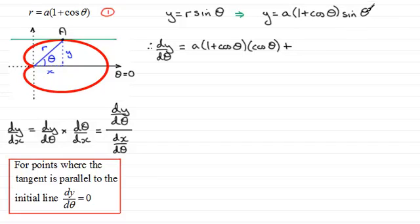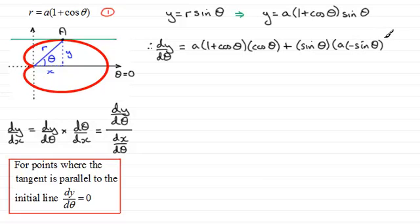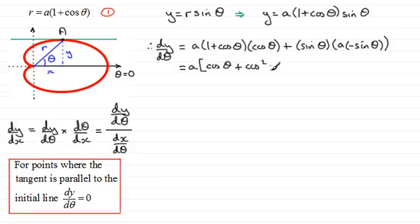Then we take sin theta and multiply by the differential of a times 1 plus cos theta. Since a is a constant it remains; differentiating 1 gives 0, and differentiating cos theta gives minus sin theta, so we get a times minus sin theta. Cleaning this up, a is a common factor. Expanding the first bracket: cos theta times 1 plus cos theta gives cos theta plus cos squared theta. For the second term we just have minus sin squared theta.